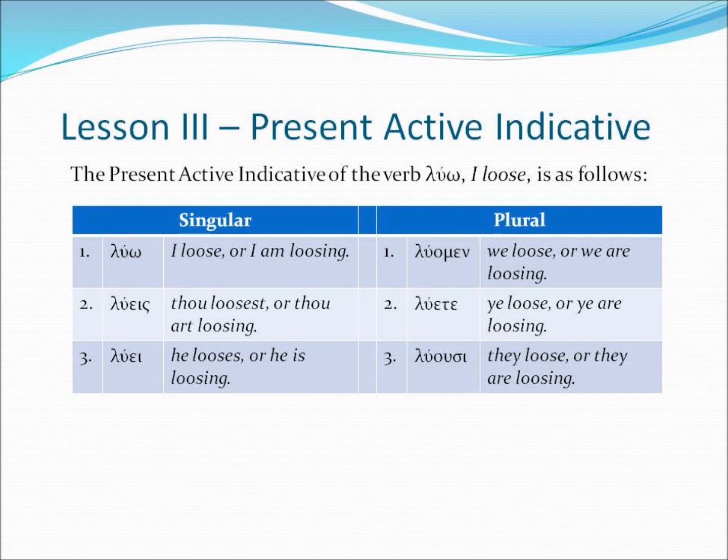The first word we're going to deal with is the word luo. Luo means I loose, or I am loosing. This is a present active indicative verb in the first person singular. If we wanted to convert luo to a second person singular, we wouldn't say luo — we would say luase. Luase means thou loosest, or thou art loosing. So you see this change on the ending of the word goes from luo to luase.